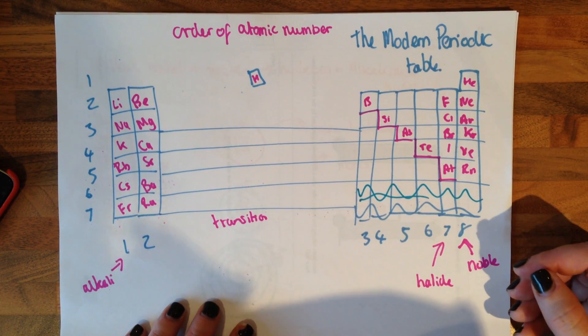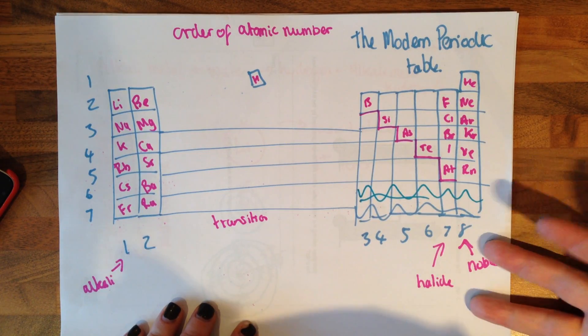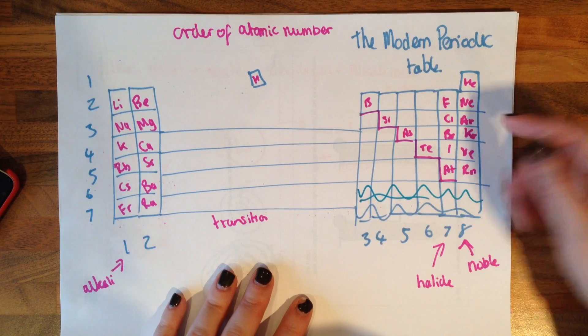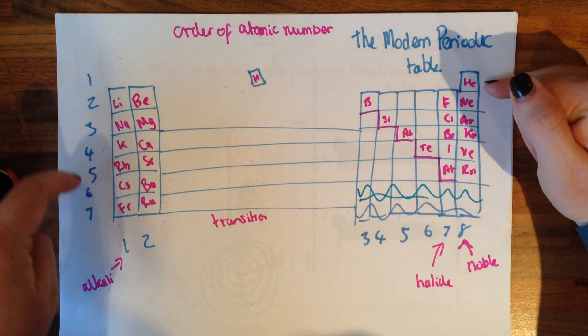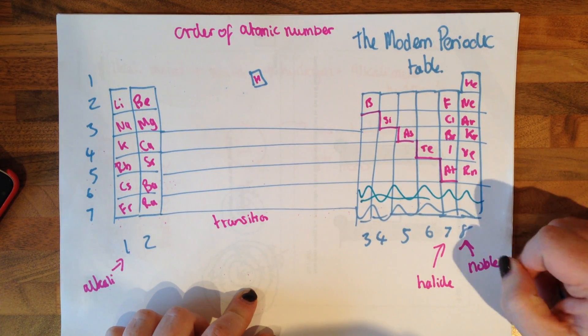Now the modern periodic table is a touch different. It's in order of atomic number. This is the number of protons. So it's also in order of electronic structure. So we have the number of rings down here. And the groups are the number of electrons in the outer shell.